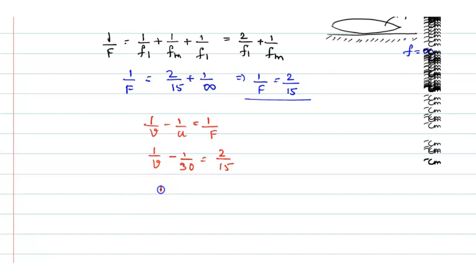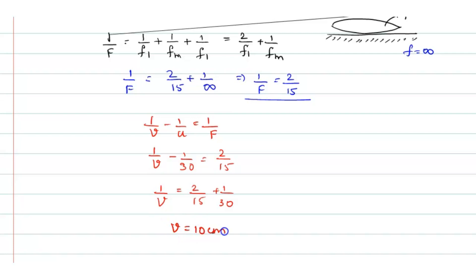So from this, you can simplify it like 1 by v is equal to 2 by 15 plus 1 by 30. And now when you simplify that, you will get the value of v. And the value of v comes out to be 10 centimeter. So v image distance will be equal to 10 centimeter.